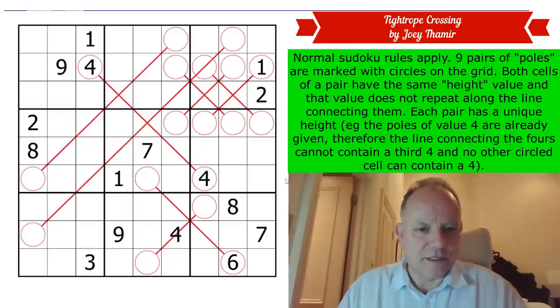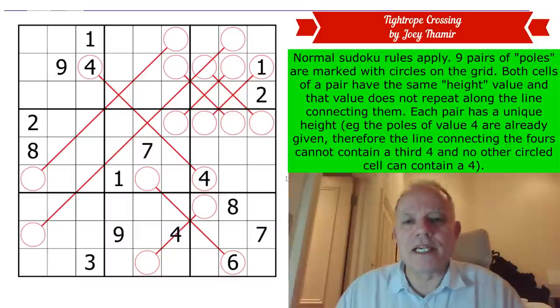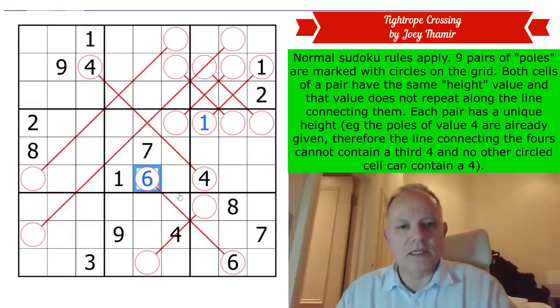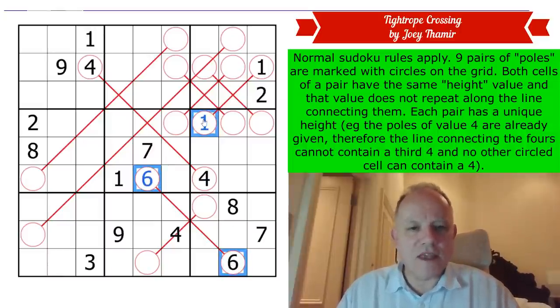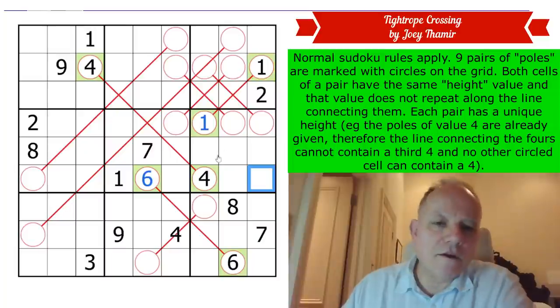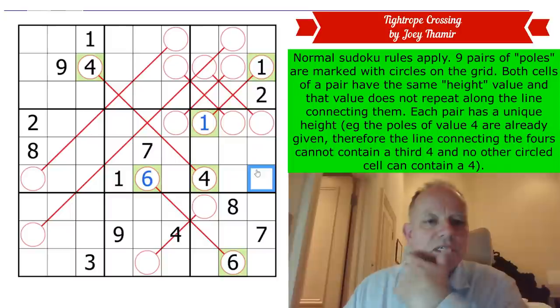We're going to have one set of ones connected, one set of twos connected, etc. Do give it a try. I'm told it's not as hard as yesterday's. I'm going to start now. Let's get cracking. We're given a couple of one-ended poles, so we can fill in one and six on the other ends of those.